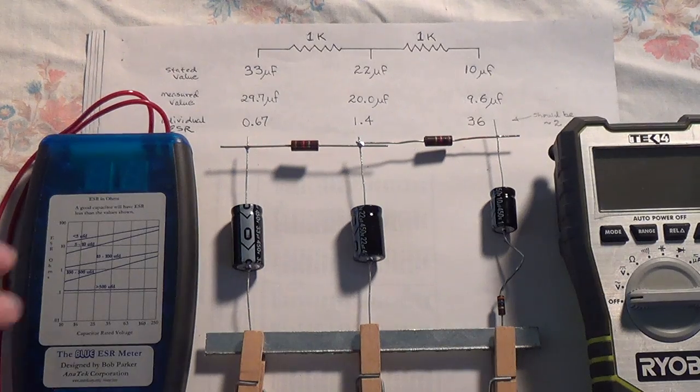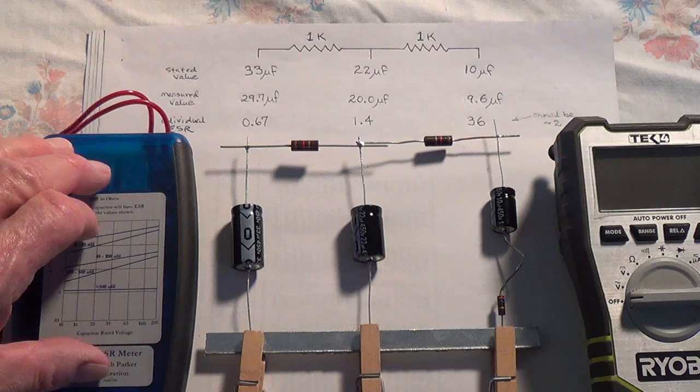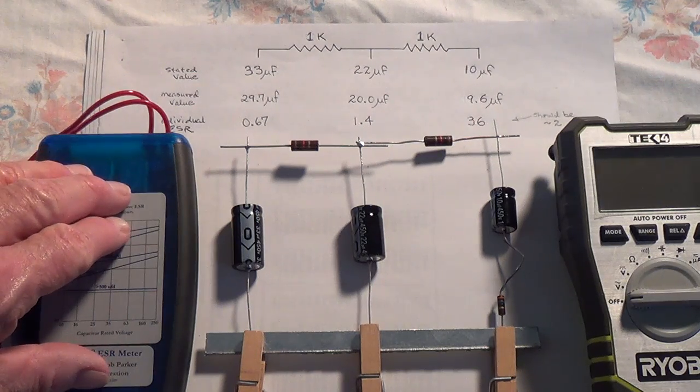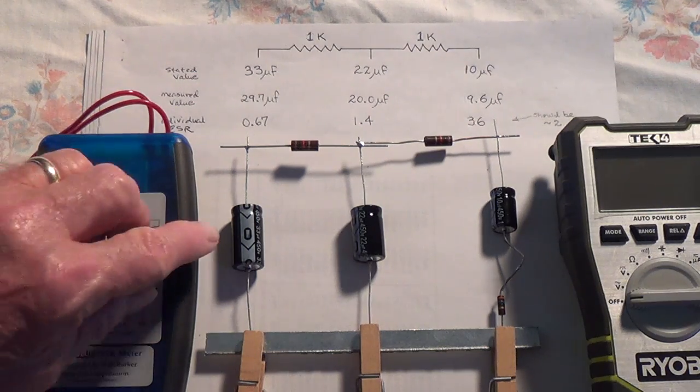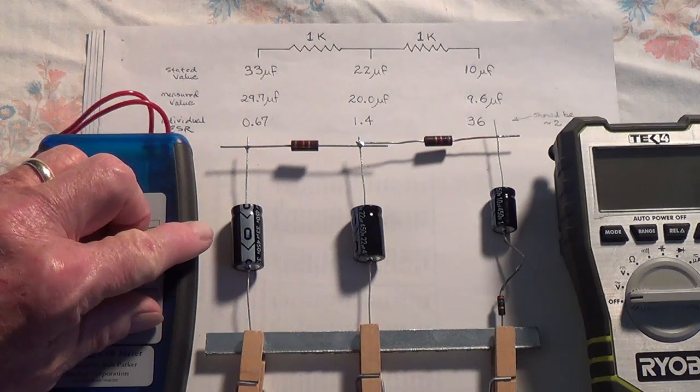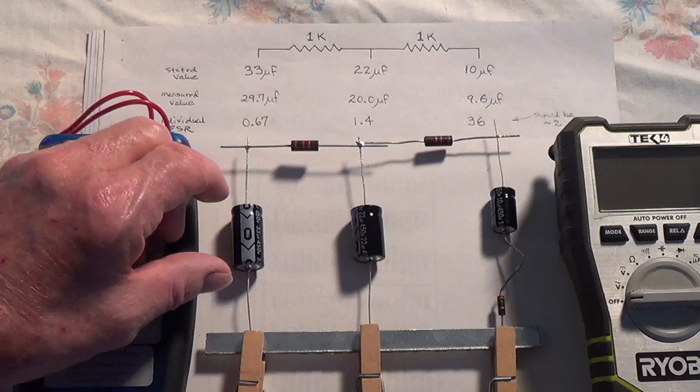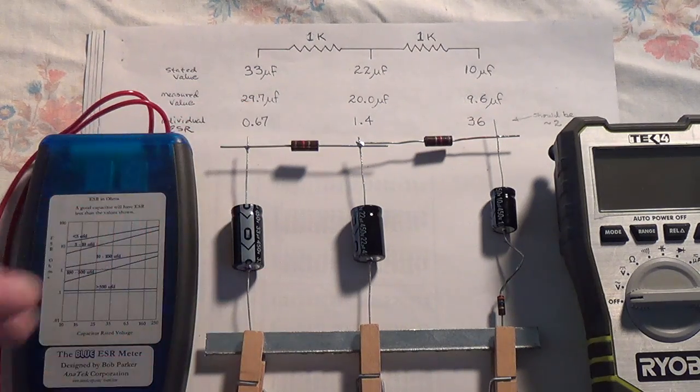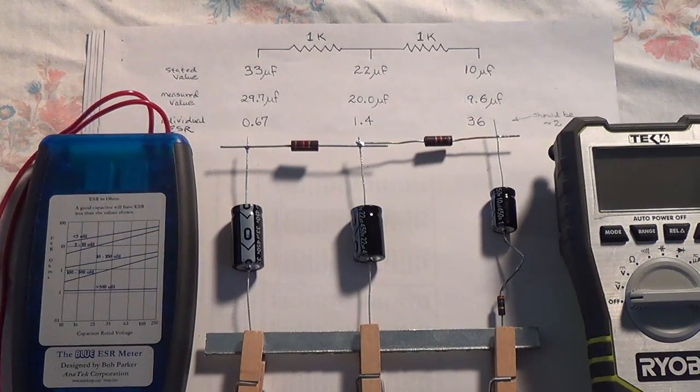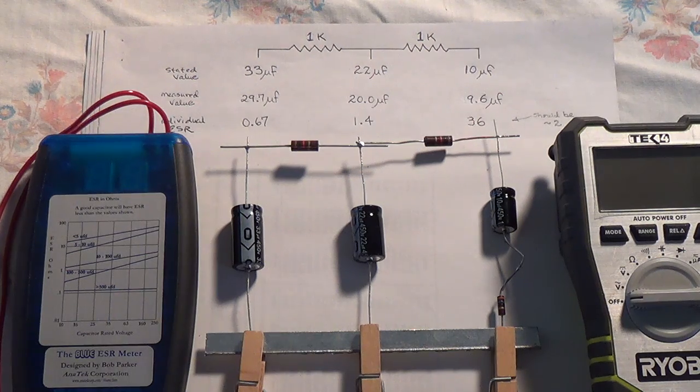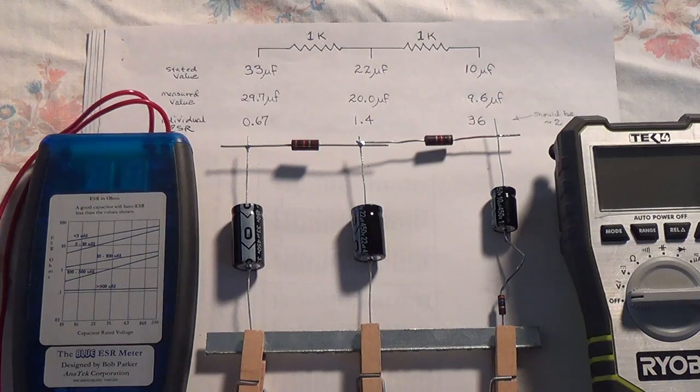In conclusion, I think it's been demonstrated that the Anatec Blue ESR meter can indeed give very good reliable readings on tube amplifier power supply filter capacitors while they are in circuit. Rusty and I really appreciate your time and interest and hope to see you again in future videos. Thanks for watching.